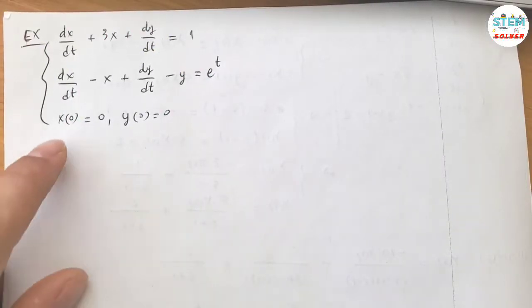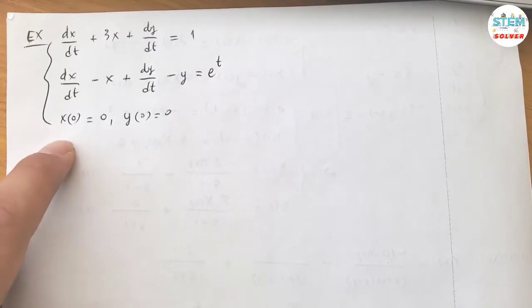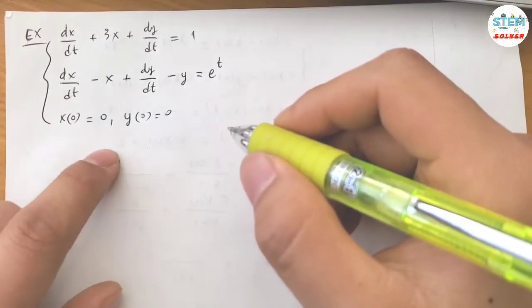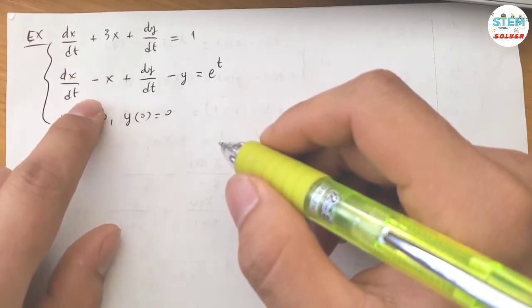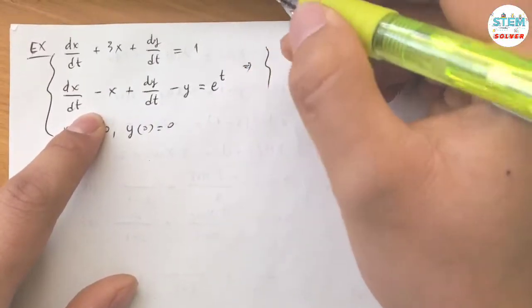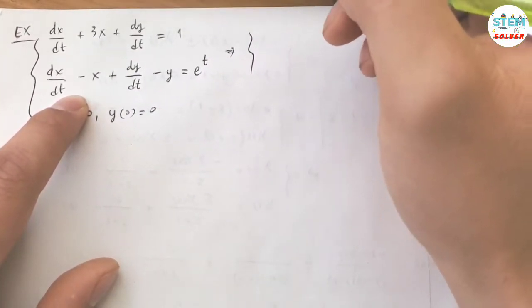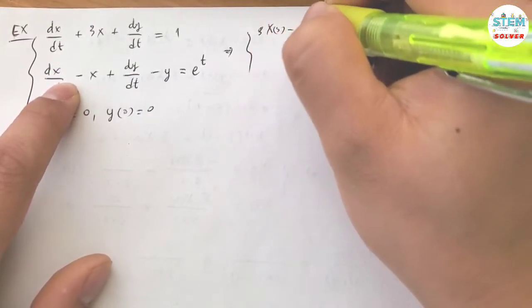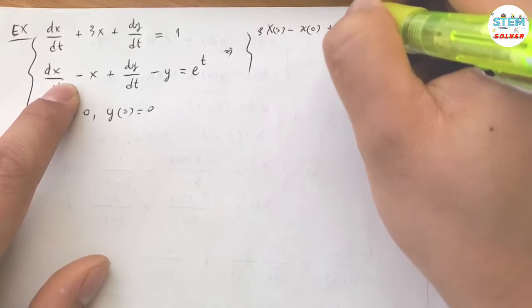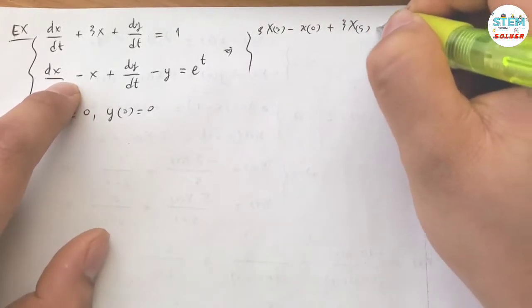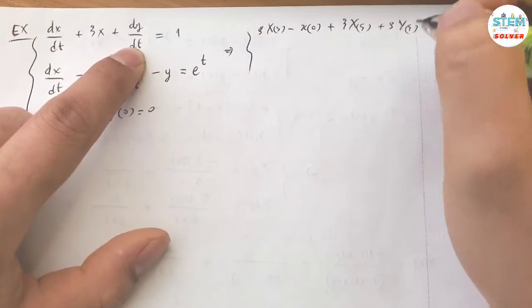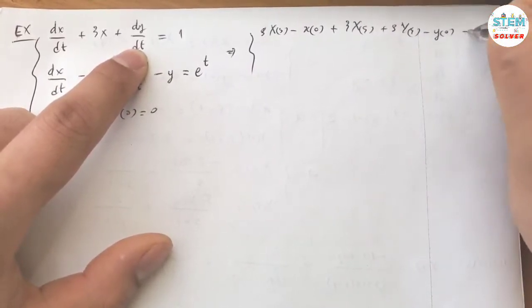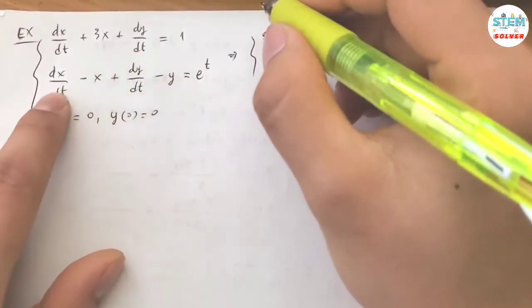Using the Laplace transform to solve this system of linear equations, first apply the derivative theorem for both of these. So I have S X(S) minus X(0) plus 3 X(S) plus S Y(S) minus Y(0) equals 1 over S.